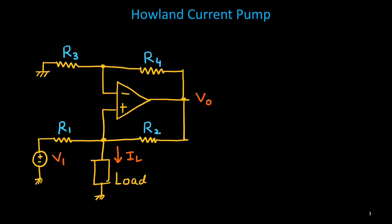So, Howland current pump, this is the circuit that we discussed last class. Here, the main objective is to provide a constant current IL, which is independent of the load, and this is generated from a voltage source V1. So, this will actually give you a voltage source to current converter.